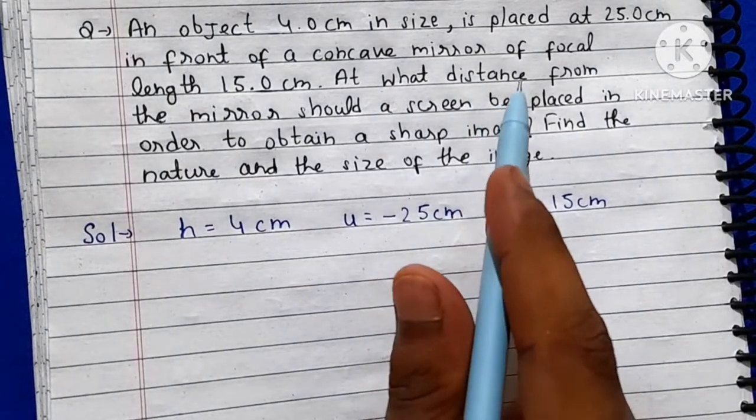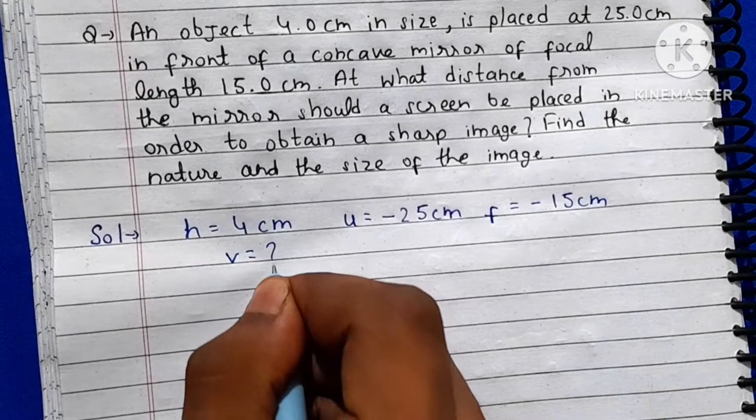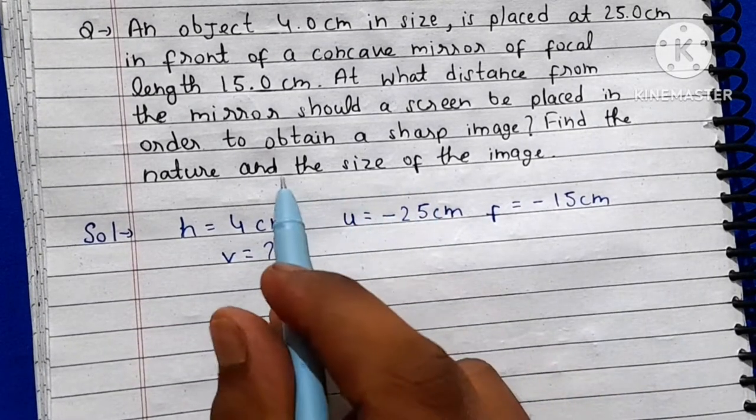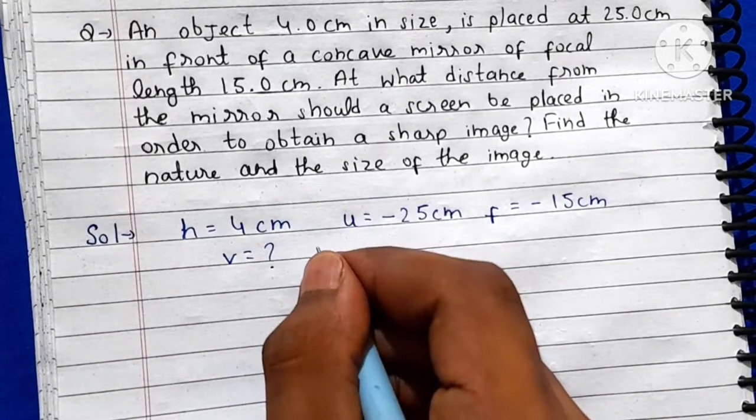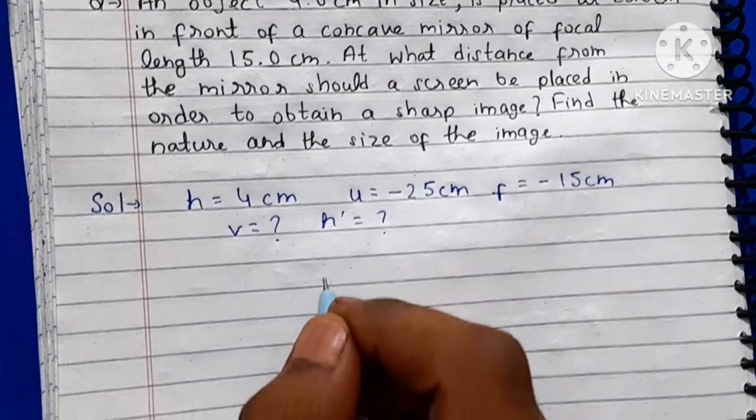We have to find at what distance from the mirror should a screen be placed, so we will find the image distance v, and find the nature and size of the image, so we will find h'. First of all we will use this formula.